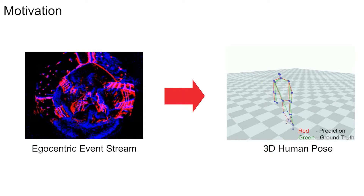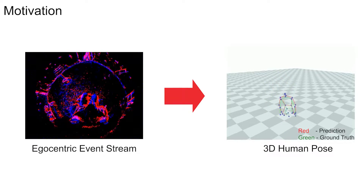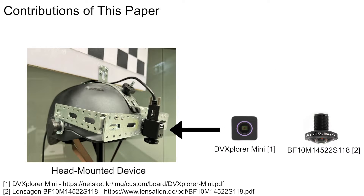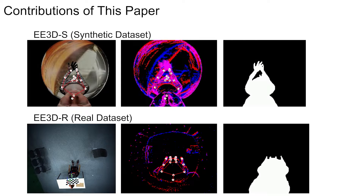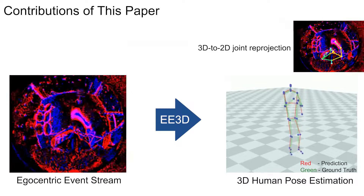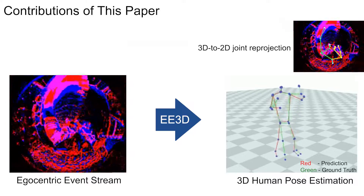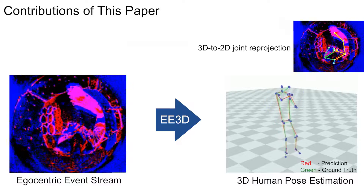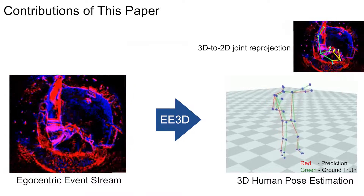Our work focuses on predicting the 3D human pose through the egocentric perspective using event streams. We design a head-mounted device with an attached monocular event camera with a fisheye lens providing a 190-degree field of view. We also synthesize and record synthetic and real datasets to enable training and evaluation of Event Ego 3D. The proposed approach, EE3D, takes a monocular egocentric event stream as input captured by the user's head-mounted device and estimates the 3D pose of the subject.